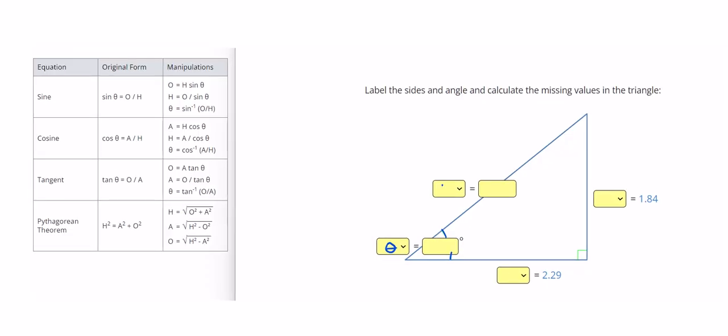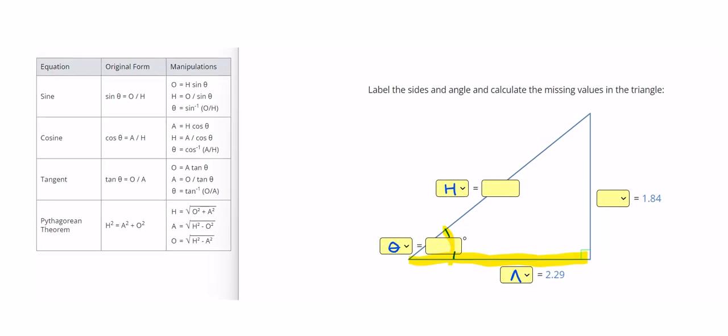My hypotenuse is my longest side. My adjacent side is the one that's touching the angle right here. So the angle, again, touches the hypotenuse and goes down to this adjacent side. And then the leftover one is my opposite side, O.